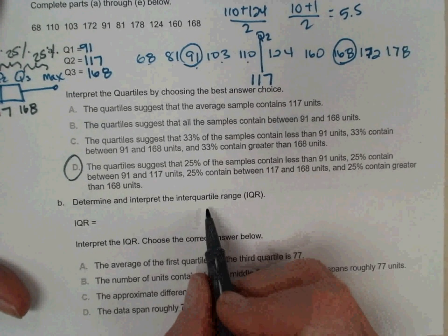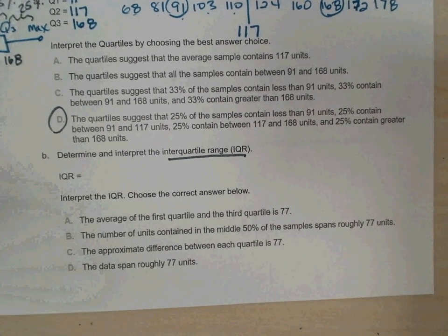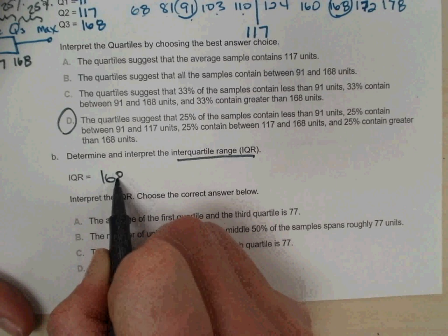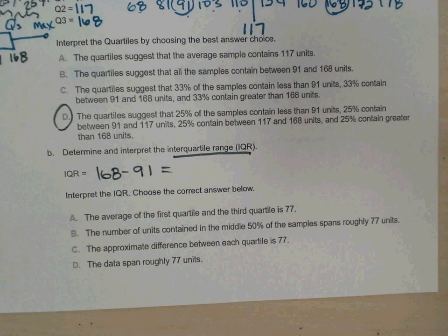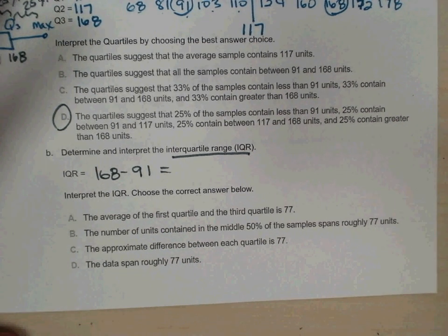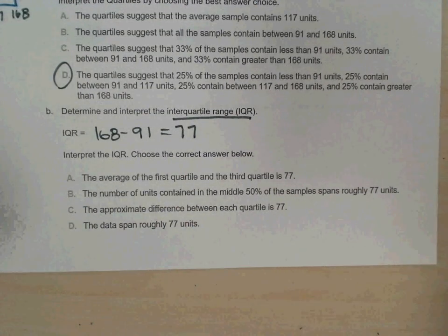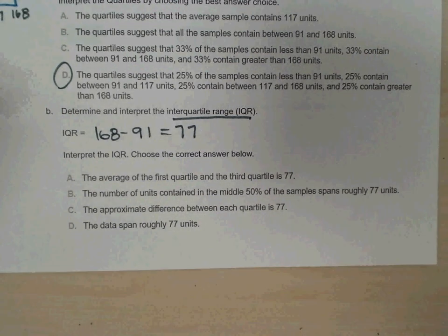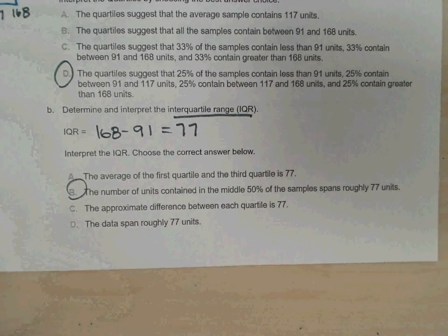Part B, determine and interpret the interquartile range. So how do you find the interquartile range, Patrick? Q3 minus Q1. That's right. And what do you get when you subtract those two numbers? 77. Excellent. And Mars, what would you say is a good interpretation for the interquartile range being 77? 50 percent of the samples span roughly 77 units? That's correct. Nicely done.